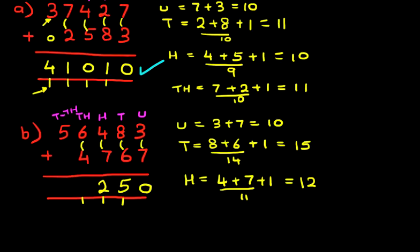Now we're going to add the thousands. We've got 6 plus 4 plus the 1 we've carried over. 6 plus 4 is 10. Plus 1 is 11. Let's write that down. 1 and 1.